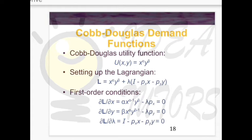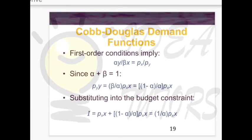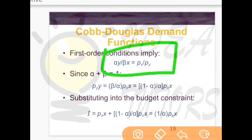Once we have those three equations from the partial derivatives of L with respect to x, y, and lambda, we solve for values. In general, when solving for prices or quantities for both goods, you will get some relationship after solving the first two equations. That relationship helps you find the quantities that maximize utility. For a Cobb-Douglas function specifically, this is not always a general result, but you will get some useful relation.